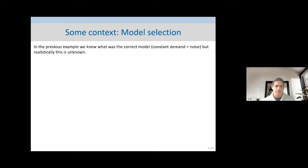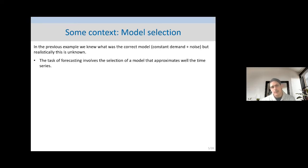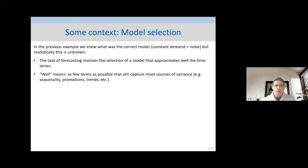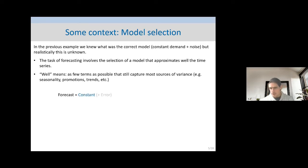So there are two effects to keep in mind. Currently we assume constant demand plus noise, but realistically we won't know this. A central task in forecasting is identifying the correct model — though 'correct' is dubious because we never get the true model, we get a good approximation. A good approximation is one that is economical in how many terms it has but manages to capture the main sources of variance, for example seasonal variance or variations due to promotions or other effects.